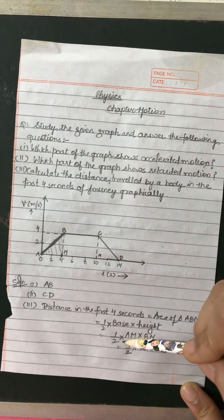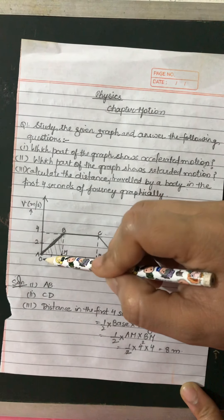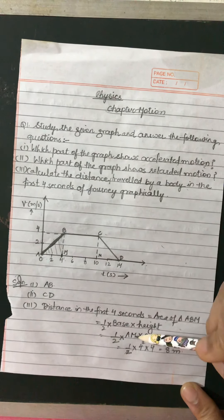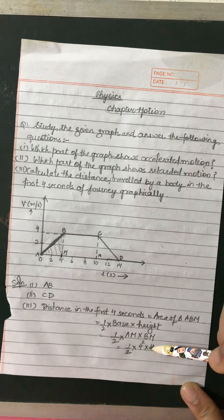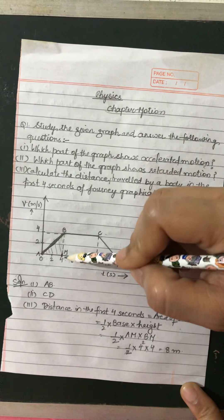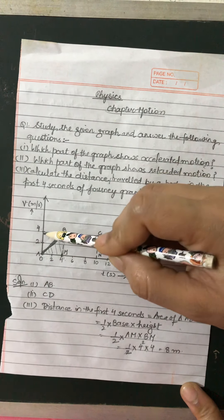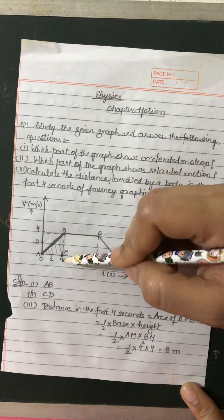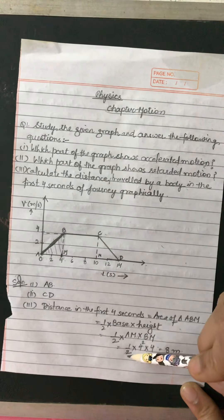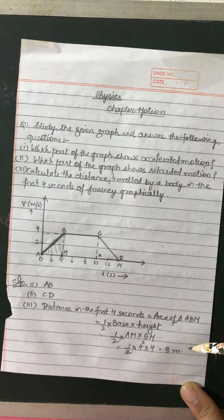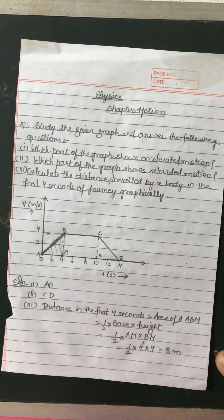Now we substitute the values. AM goes from zero to four, so AM equals 4. BM also goes from zero to four, so BM equals 4. So distance = half × 4 × 4 = half × 16 = 8 meters. The distance traveled in the first four seconds is 8 meters.